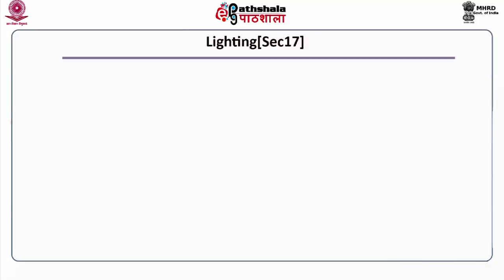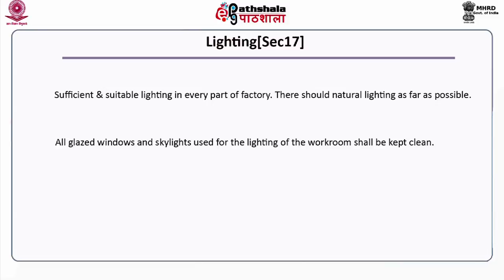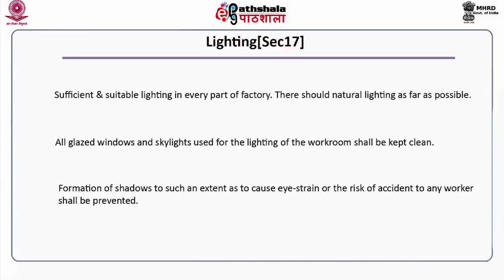Section 17, lighting: there should be sufficient and suitable lighting in every part of the factory, with natural lighting as far as possible. All glazed windows and skylights used for lighting of the workroom shall be kept clean. Formation of shadows to such an extent as to cause eye strain or the risk of accident to any worker shall be prevented.